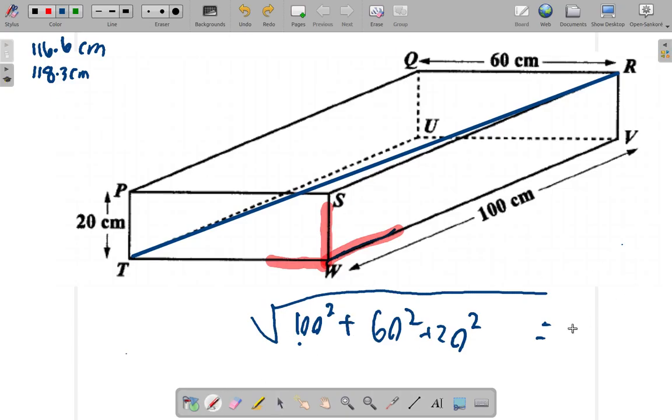So we have our 118.3 centimeters. We could look at it from two different angles: we could look at it using the three axes in three dimensions, or we could look at it from having our 116.6 slanted and lengthened through a certain angle, going by 20 centimeters.